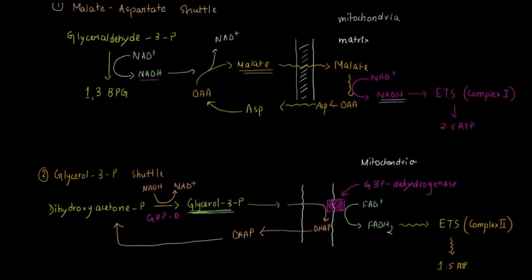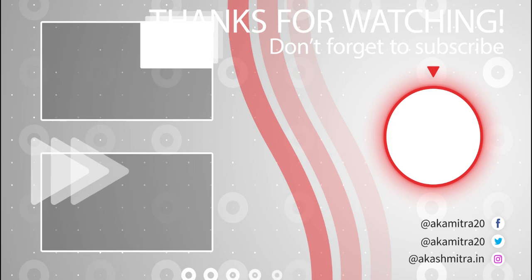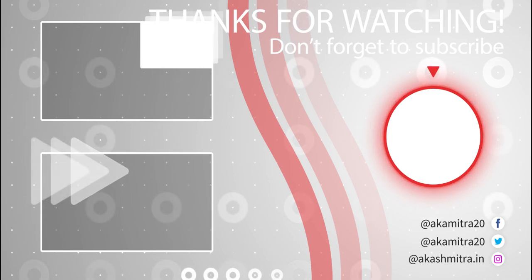In summary, in the Malate-Aspartate shuttle, the electron transport chain receives electrons from NADH, fed into Complex 1, thereby making 2.5 ATP. Whereas for the glycerol-3-phosphate shuttle, the electron transport system gets electrons from FADH2, fed into Complex 2, making 1.5 ATP. Those are the two different shuttle systems for the glycolytic pathway. Hope you enjoyed the video — give it a thumbs up and check out the other linked videos.